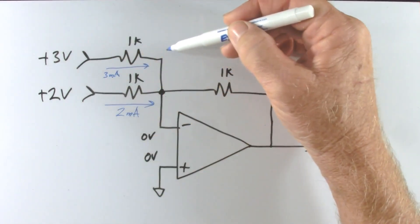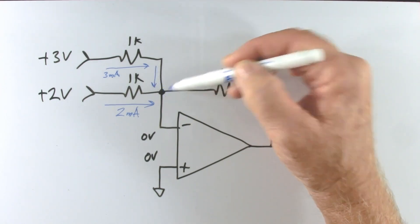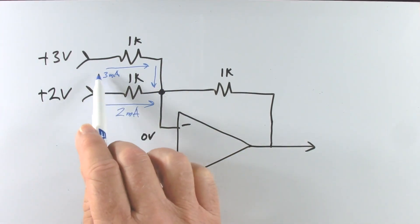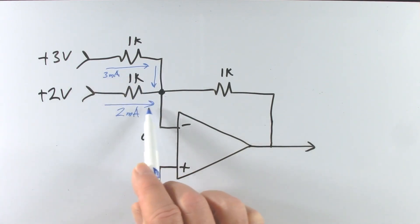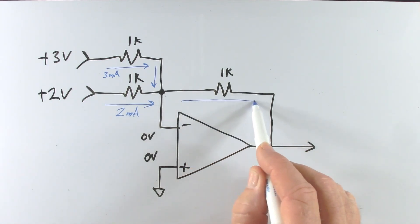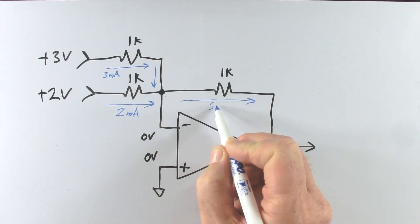So we have 3 milliamps going this way, 2 milliamps going that way. Where does that 3 milliamps go? Well they all go to the same point here. Now we have to remember our Kirchhoff's current law which says that the total current flowing out of this node will equal the total current flowing in. So we have 3 milliamps going in, 2 milliamps going in, so coming out. Remember no current flows into the op amp so all of that current has to flow through this 1k resistor. So 3 milliamps plus 2 milliamps. Kirchhoff's current law says that will add up to 5 milliamps.